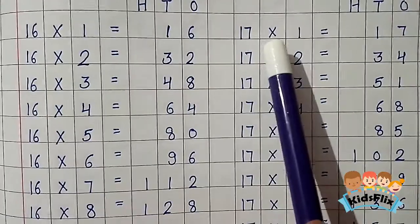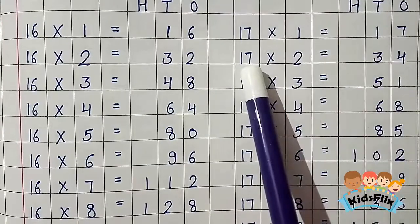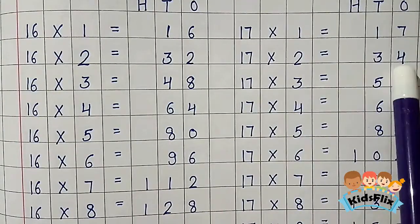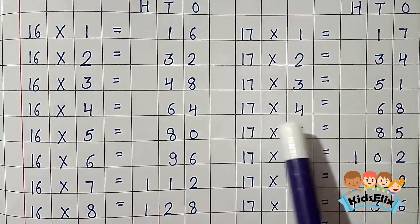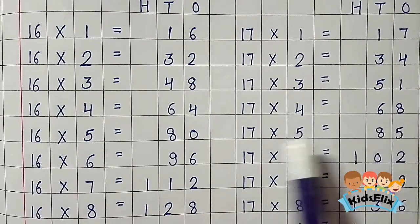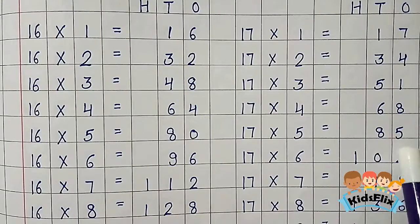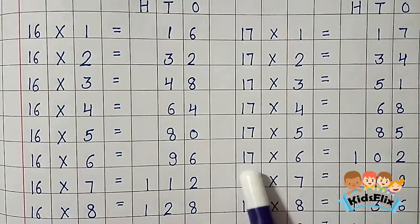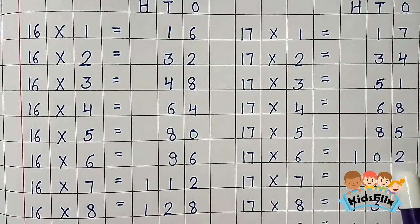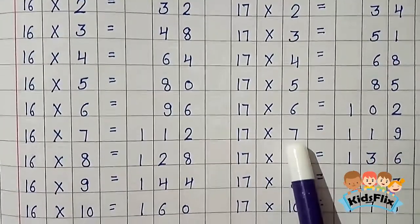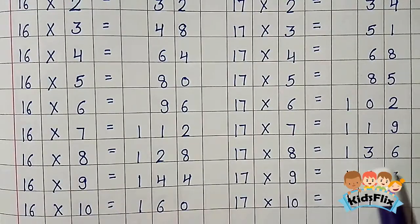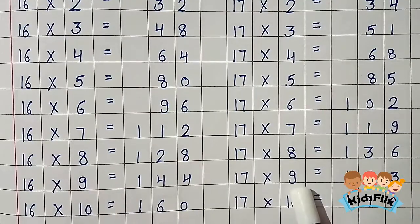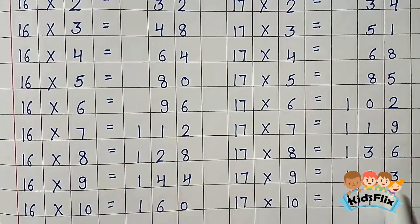17 1s are 17. 17 2s are 34. 17 3s are 51. 17 4s are 68. 17 5s are 85. 17 6s are 102. 17 7s are 119. 17 8s are 136. 17 9s are 153. 17 10s are 170.